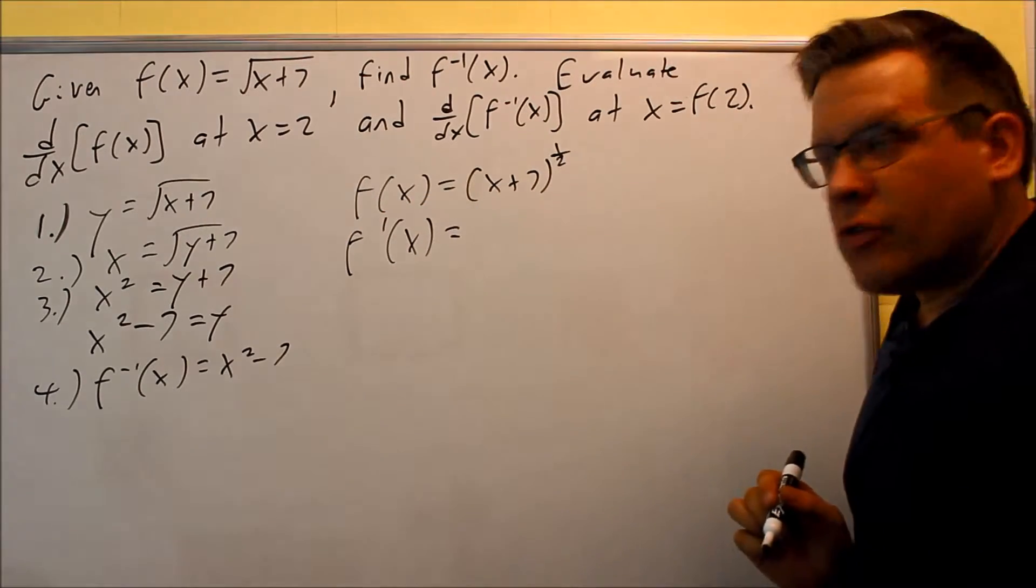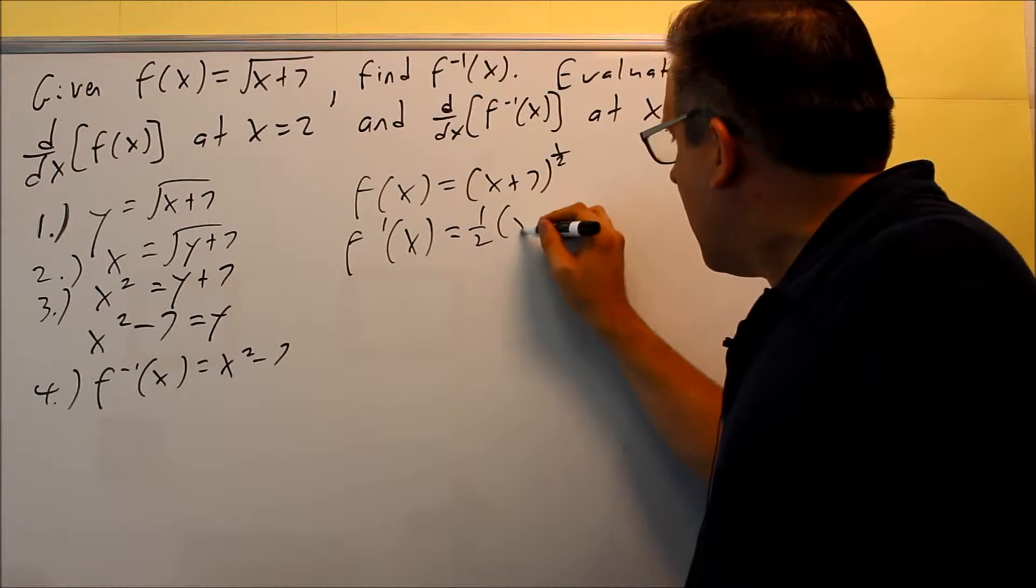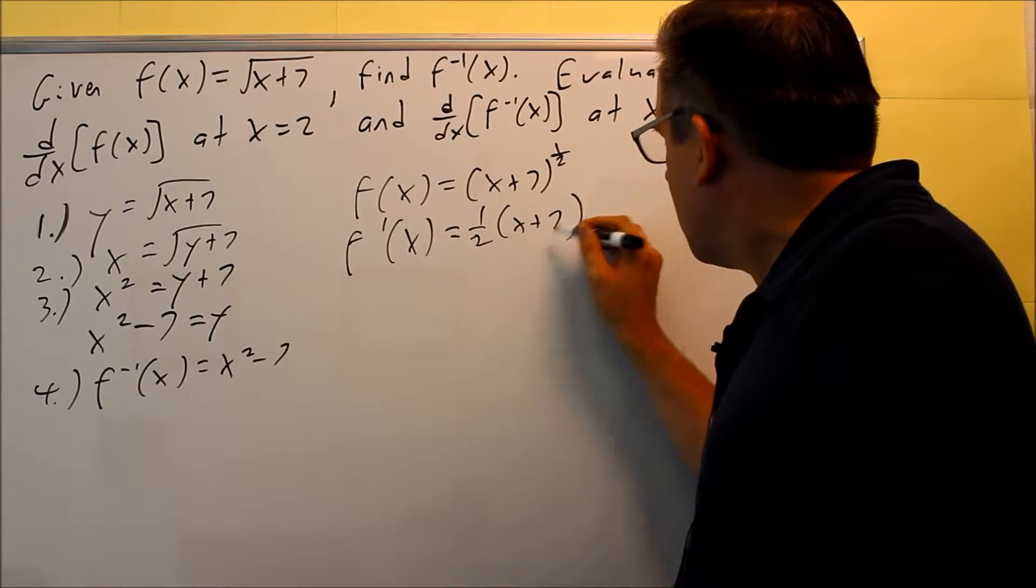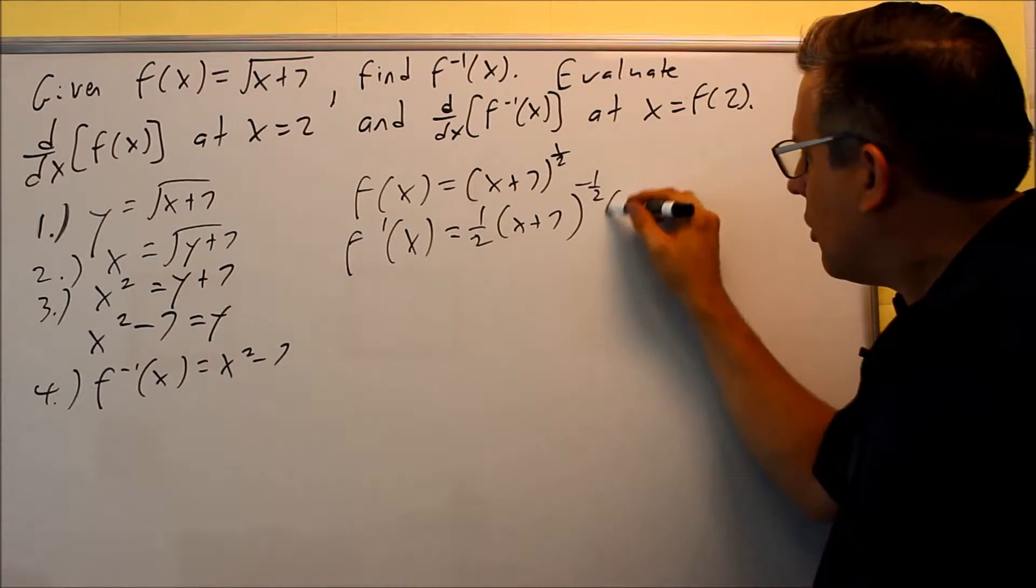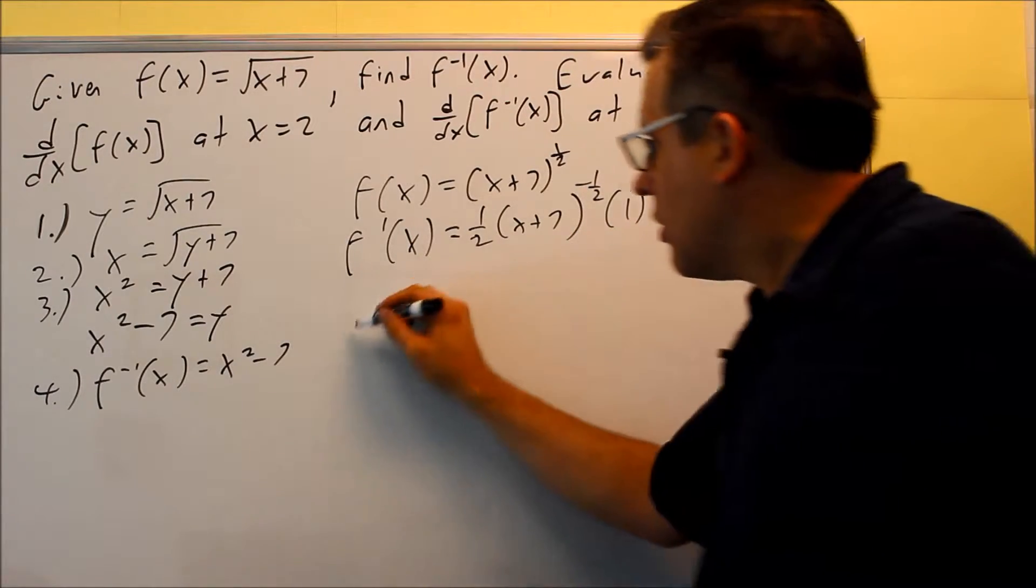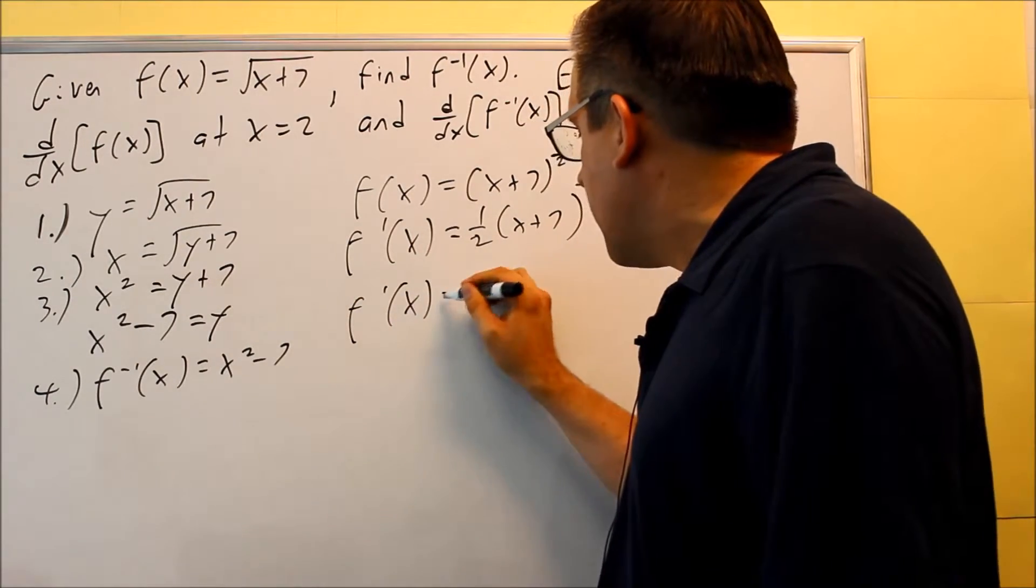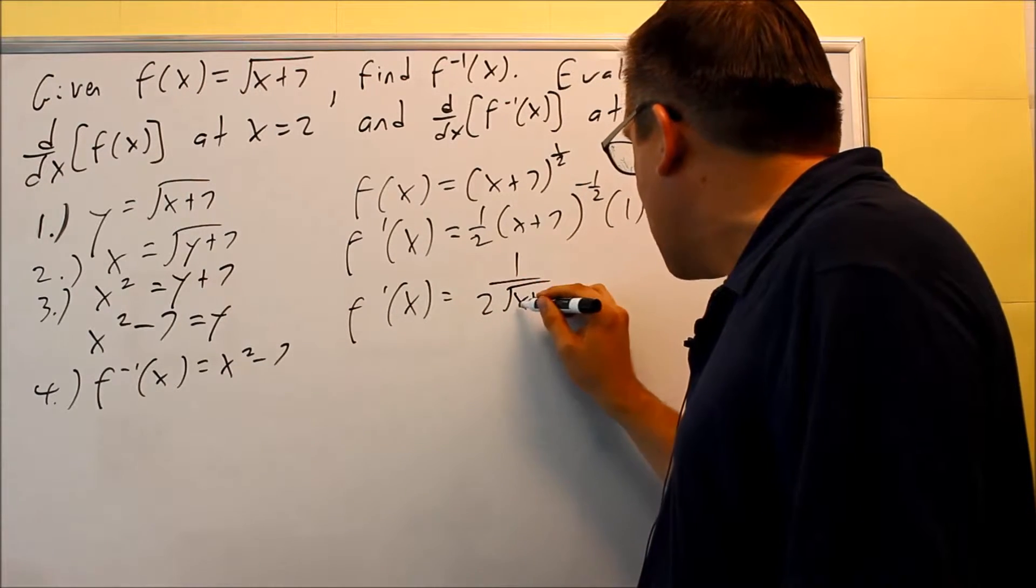For the derivative, we have to use chain rule. So one-half comes down, x plus 7, subtract 1 from the exponent to get negative one-half. Multiply by the derivative of the inside. The derivative of x plus 7 is 1. So the derivative of the original is 1 over 2 square root of x plus 7.